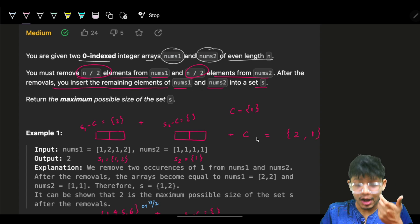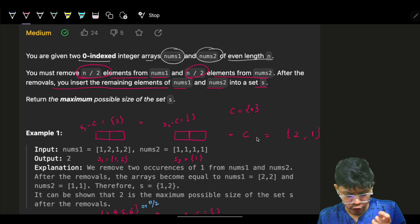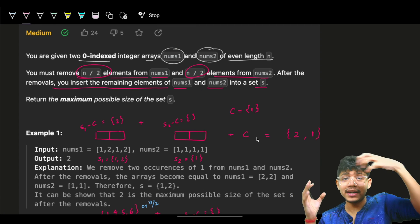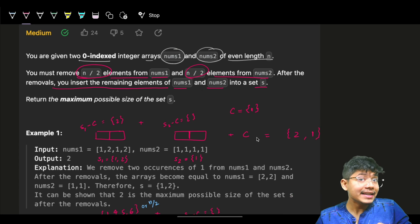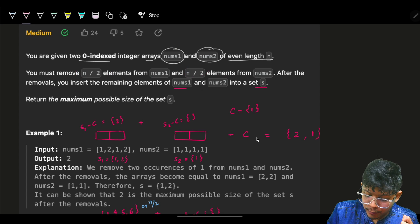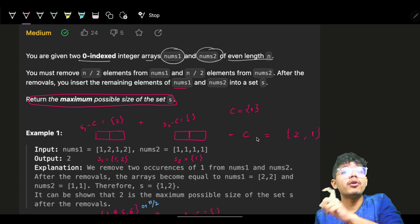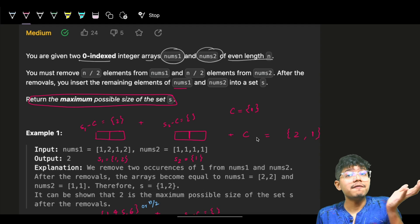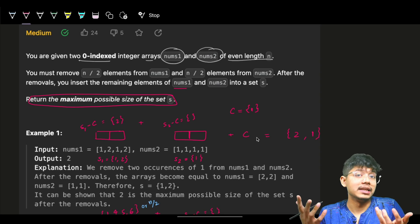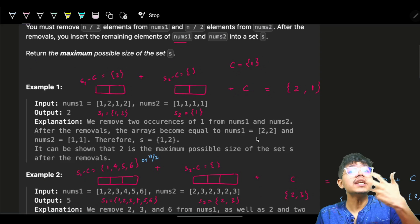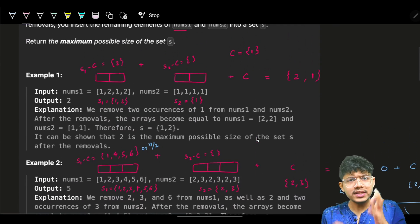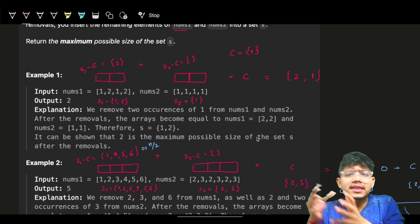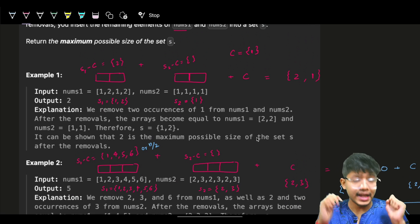After removal, you insert the remaining elements of nums1 and nums2 into a set S. A set contains unique elements, so you're taking some elements from nums1 and some from nums2, combining them into a set. The goal is that whatever you put in the set should have the maximum possible size — meaning you want to maximize the number of unique elements.